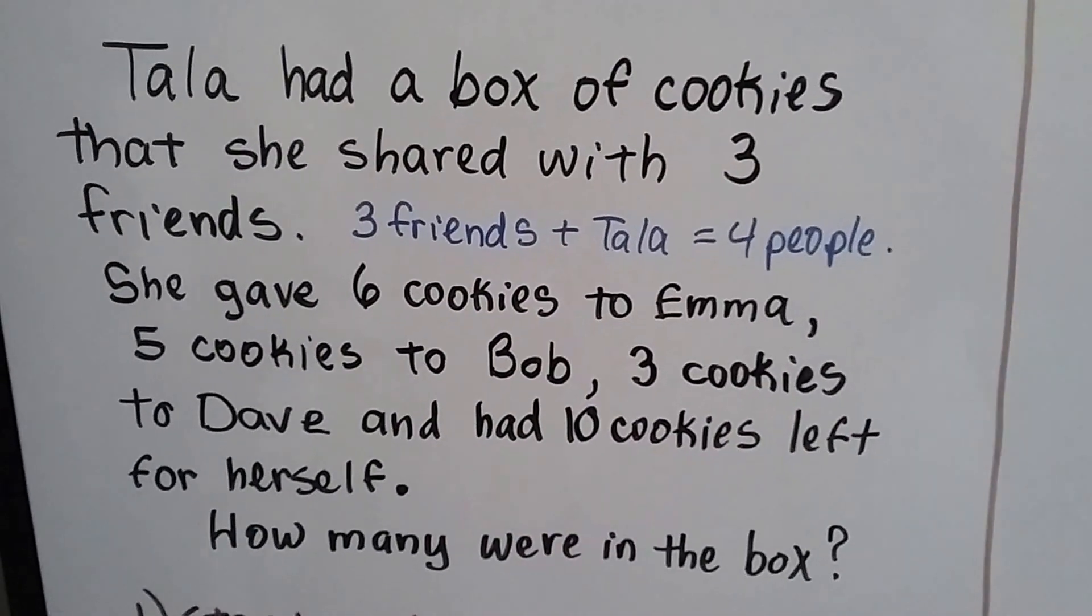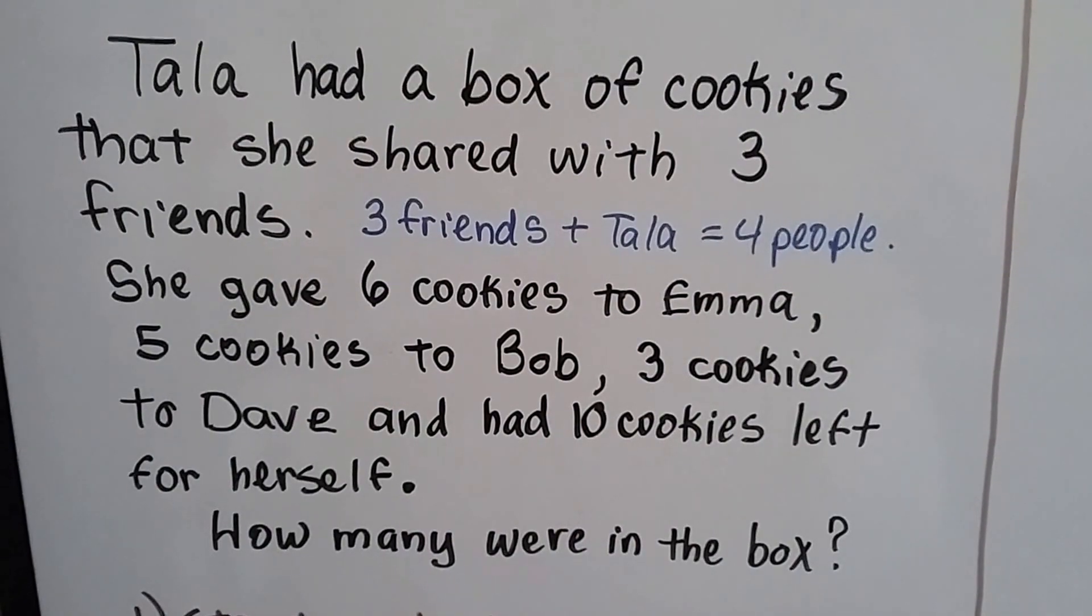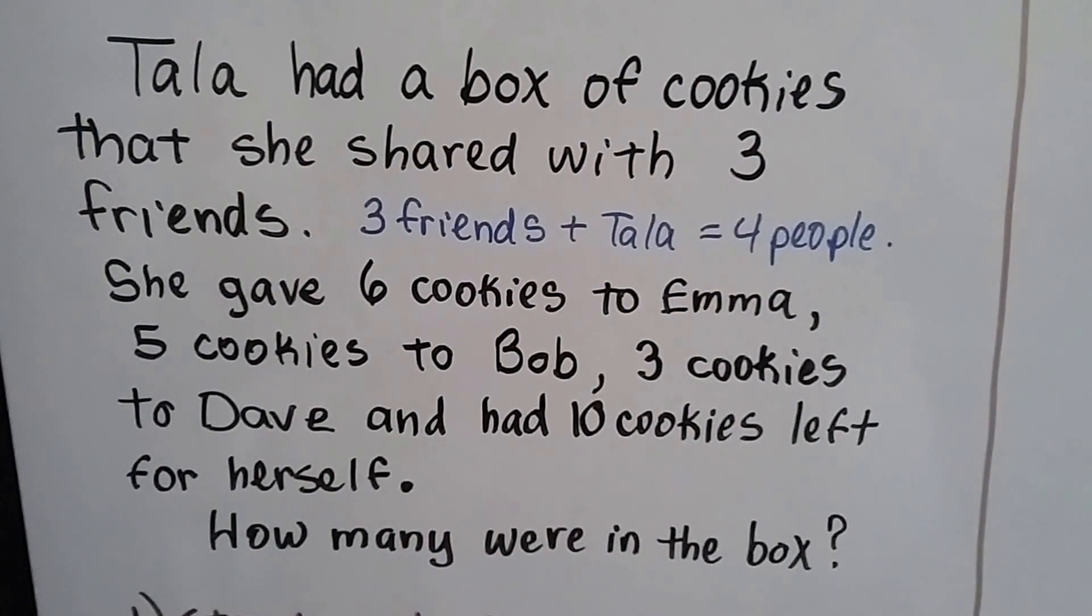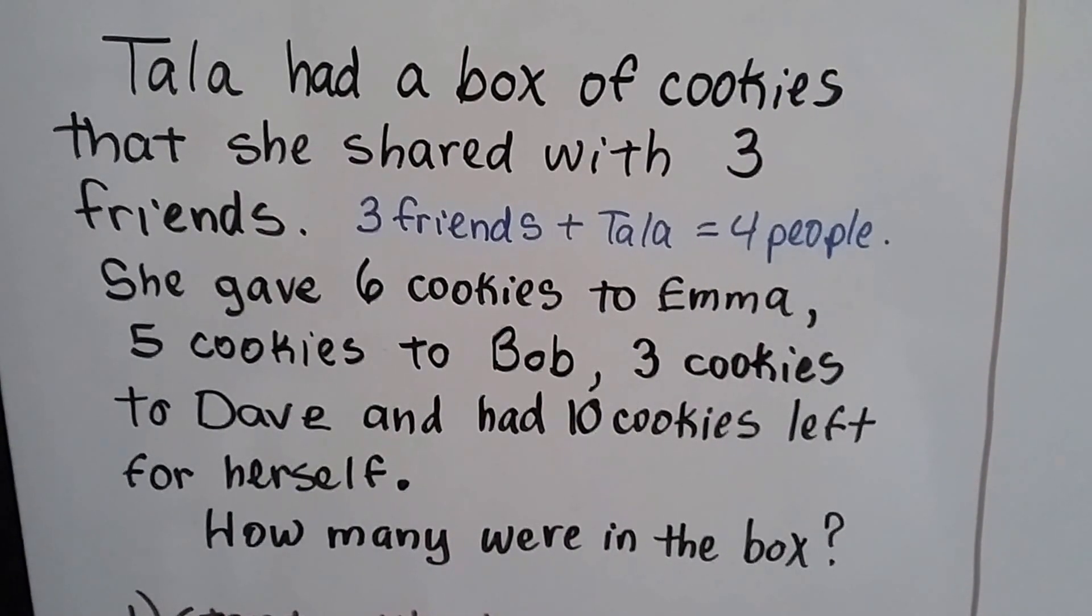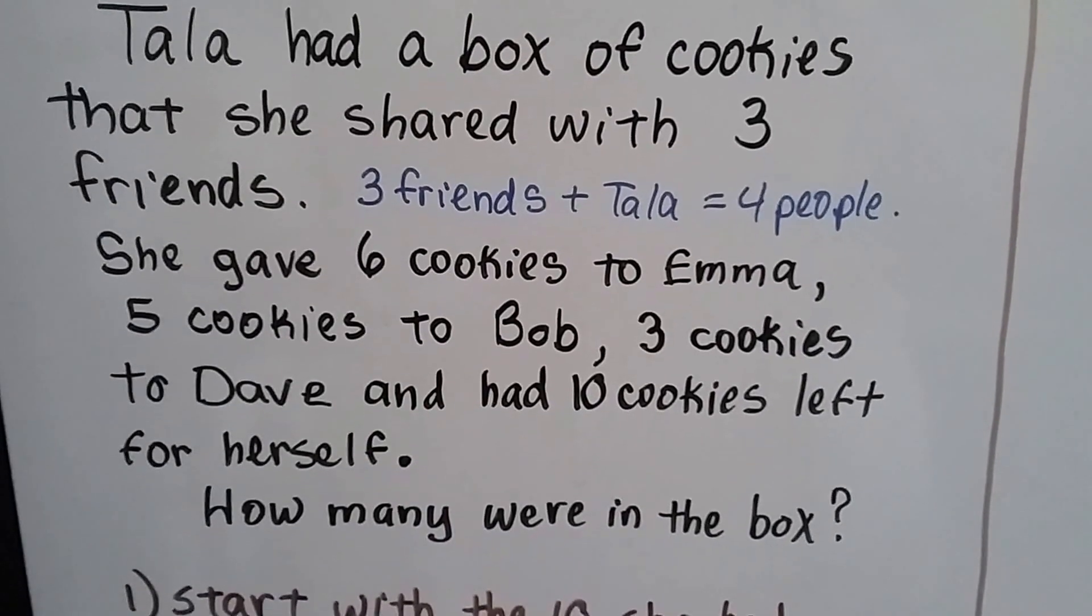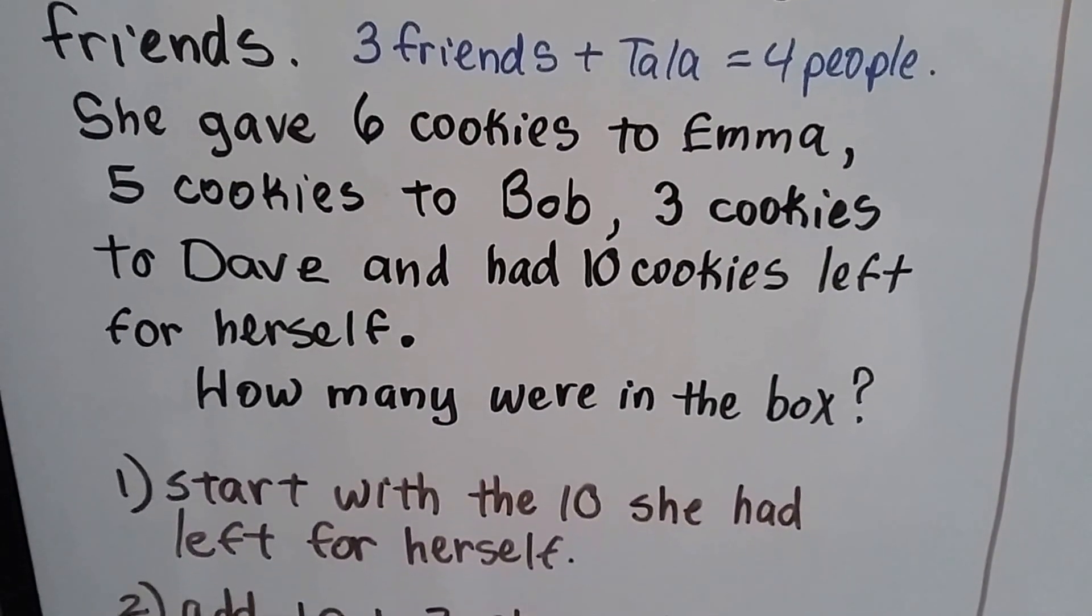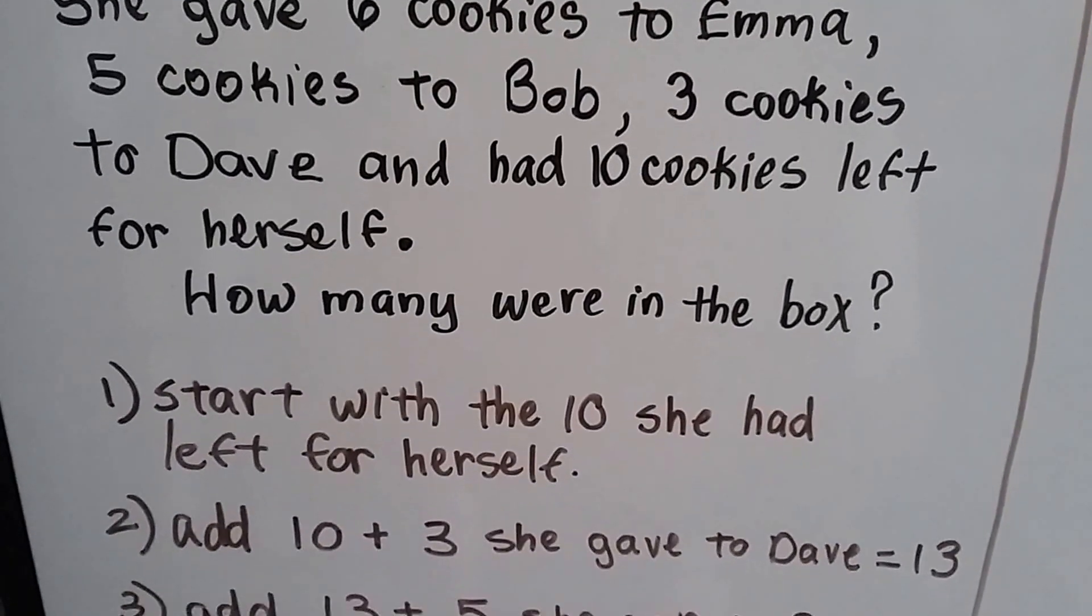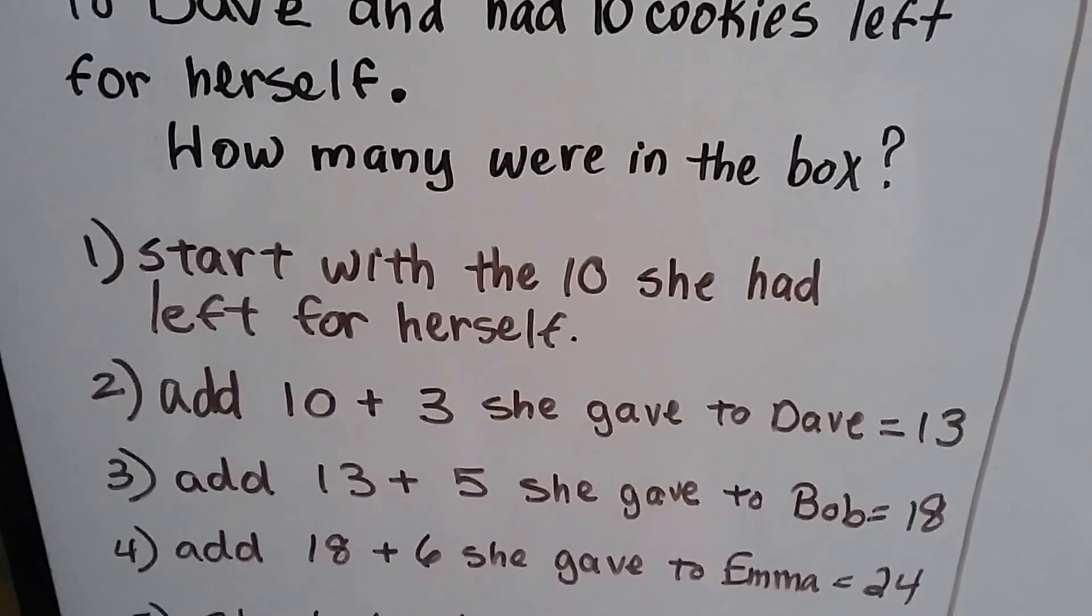Tala had a box of cookies that she shared with three friends. So that means if there's three friends plus Tala, that's four people. She gave six cookies to Emma, five cookies to Bob, three cookies to Dave, and had ten cookies left for herself. How many were in the box?